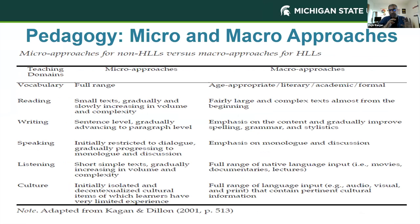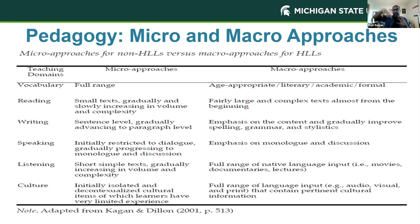Thinking about pedagogical approaches — Kagan and Dylan talk about micro and macro approaches. Typically my classroom has 70–80% heritage and 30% non-heritage students, so I cannot just avoid one group. For heritage learners, the macro approach works better — it looks top-down, giving authentic material and inducing to a certain level. For non-heritage learners it's bottom-up — deductive. That's the methodology and pedagogical approach I was thinking about when I was writing this book.